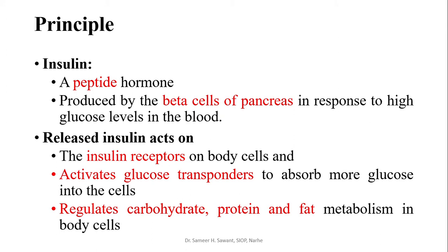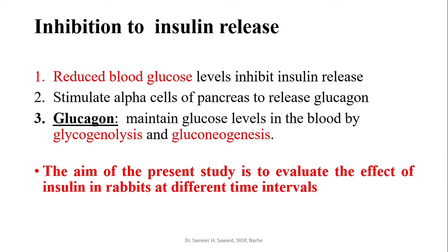The principle: insulin is a peptide hormone secreted by beta cells of the pancreas in response to high blood glucose level. This released insulin acts on insulin receptors and activates glucose transporters to absorb more glucose into the cell. Insulin regulates carbohydrate, protein, and fat metabolism in body cells.